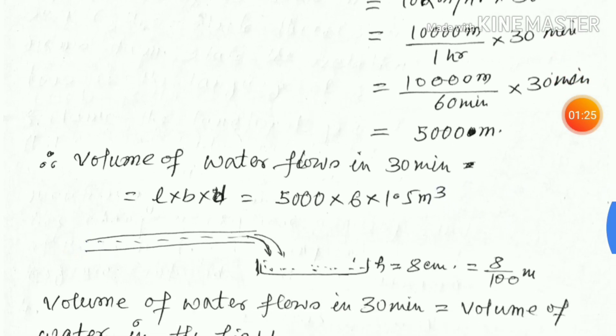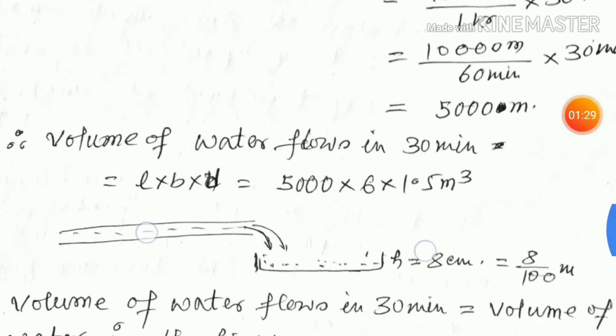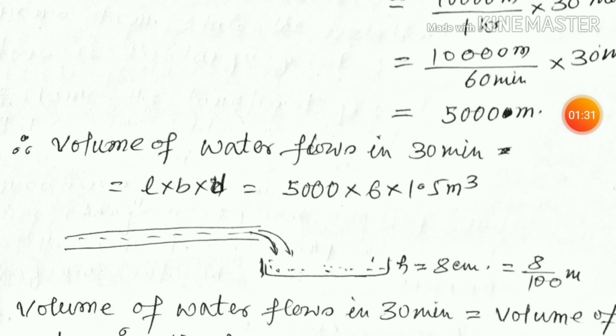Volume of water flows in 30 minutes equals length into breadth into height: 5,000 into 6 into 1.5 meter cube.